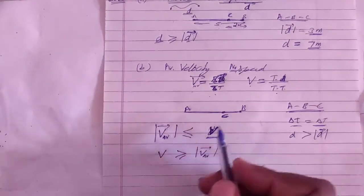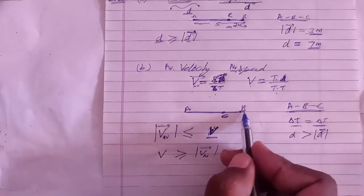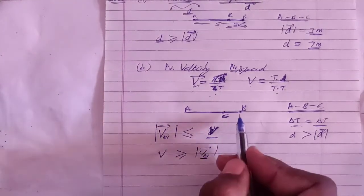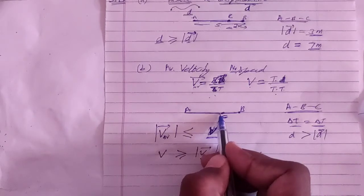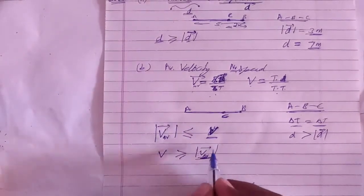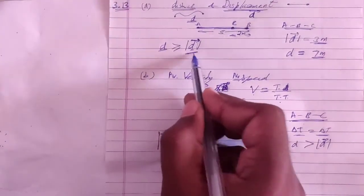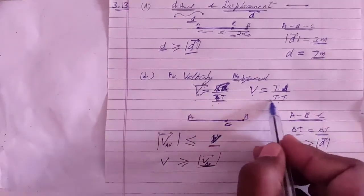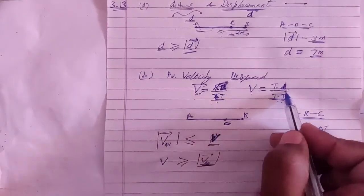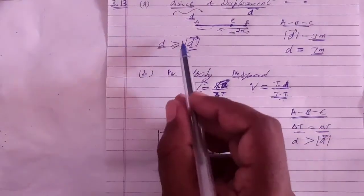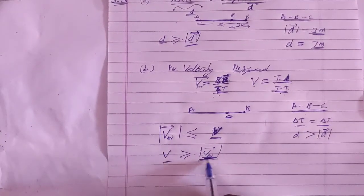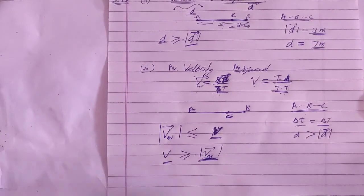The equality holds when the motion is in a straight line and in the same direction throughout — that is, when there is no change in direction. If the particle moves in different directions at any point, then distance will be greater than the magnitude of displacement, so average speed will be strictly greater than the magnitude of average velocity. Thus: speed ≥ magnitude of velocity.